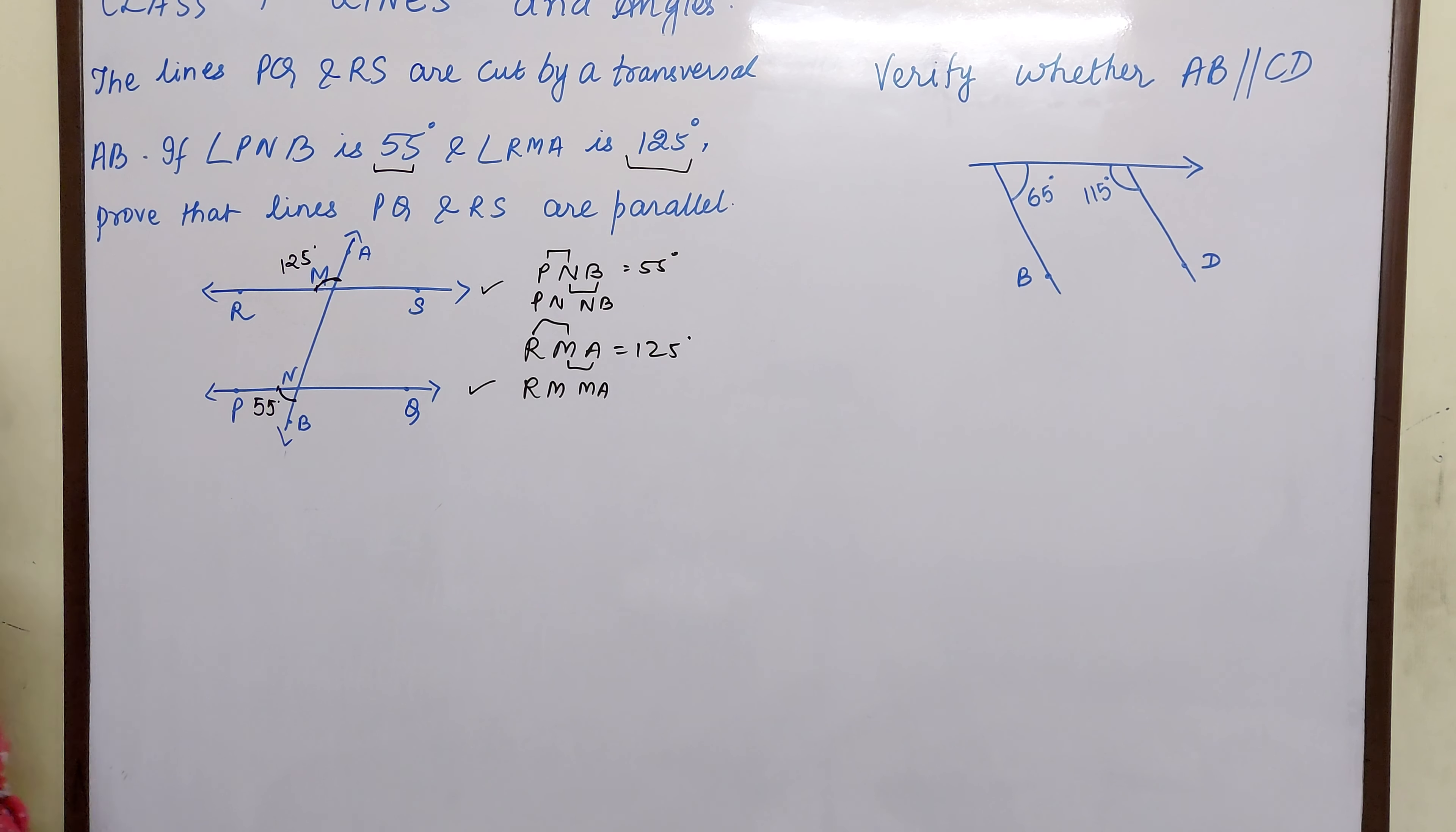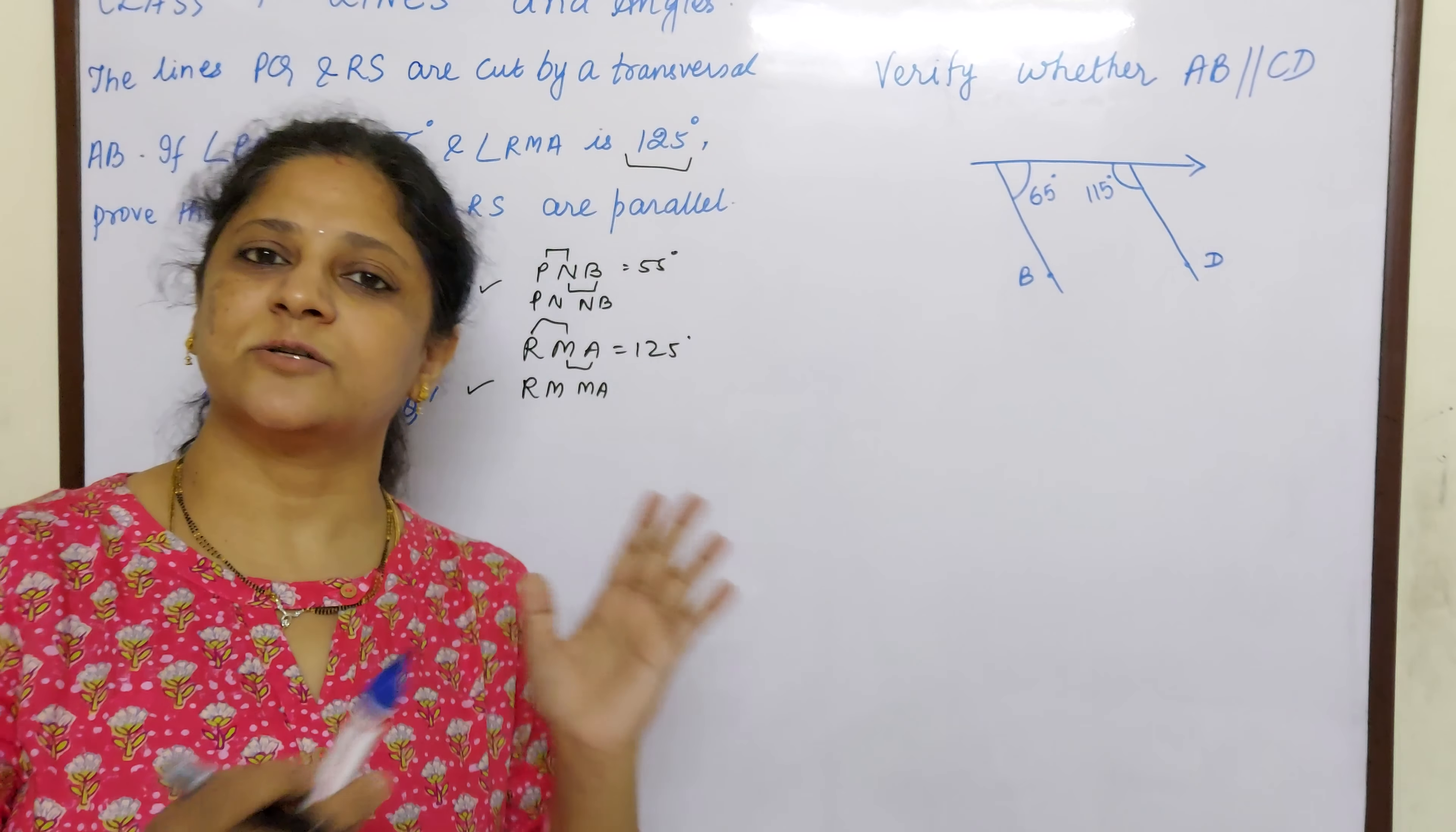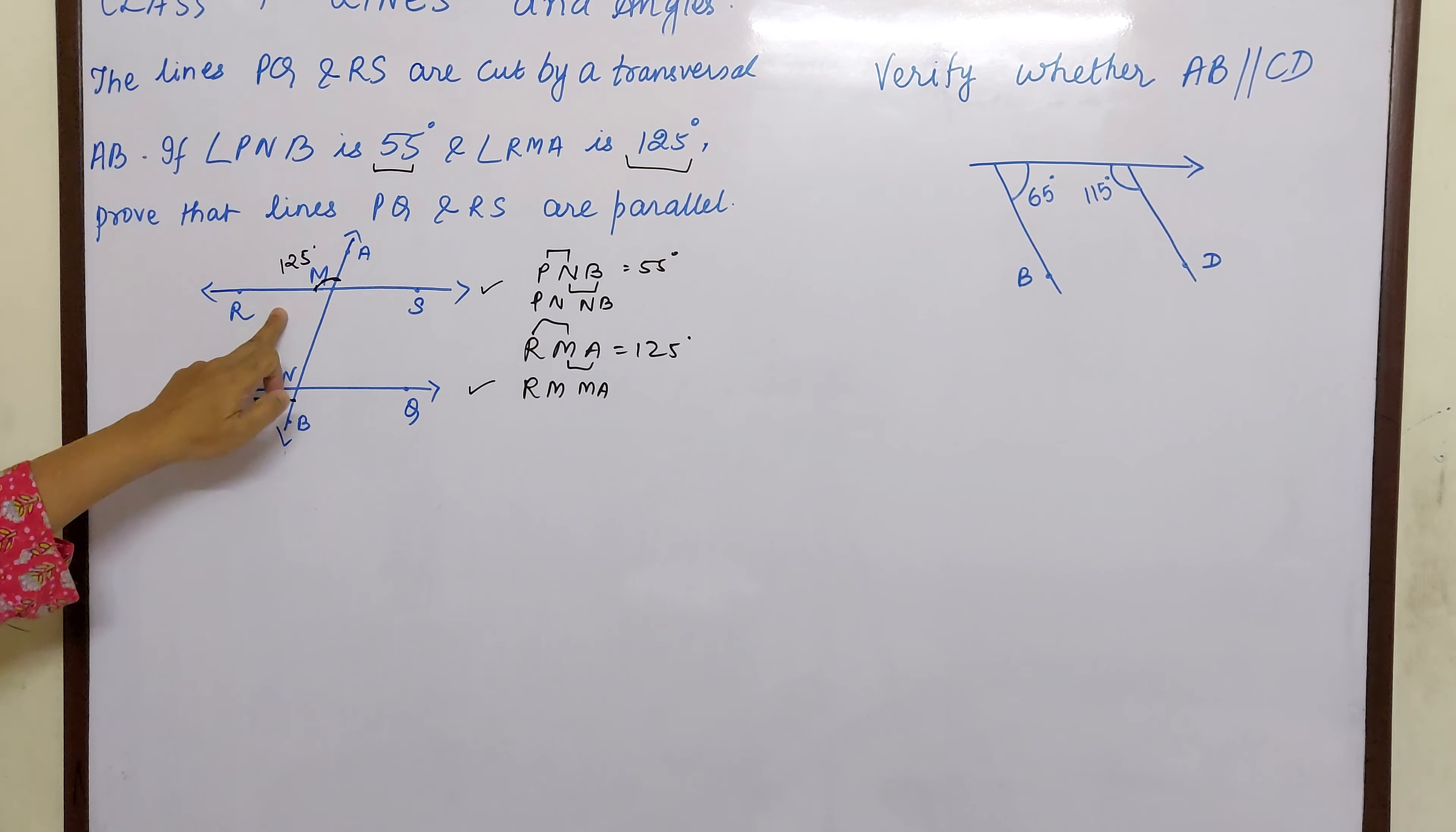Now how do we prove children that they are parallel? In parallel, corresponding angles are equal and alternate interior angles are equal. Interior angles on same side of the transversal are supplementary. So we will see here what is getting true.